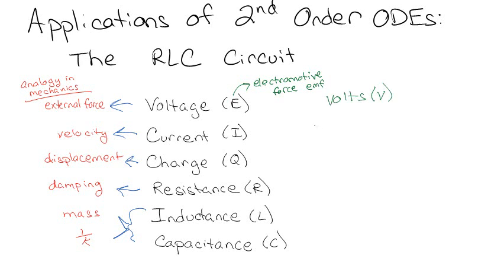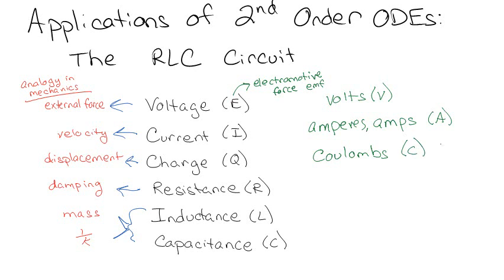We have current, which is measured in amperes or amps, and we call that capital I. Charge is measured in coulombs. Resistance is measured in ohms, which uses the omega symbol. Inductance is measured in henries, and capacitance is measured in farads.